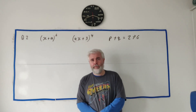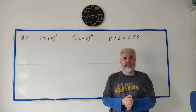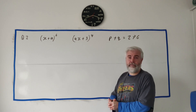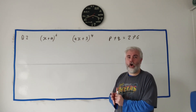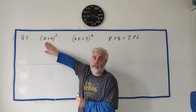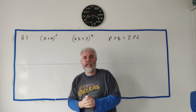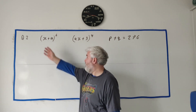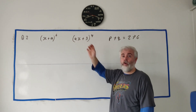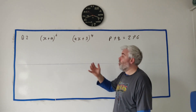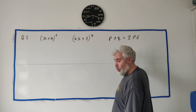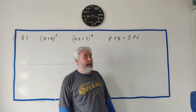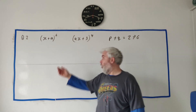In question 2 we're going to be dealing with expanding two terms and solving some algebraic questions. They've said if we expand (x + a)^6 out, the coefficient of x to the power of 4 is p. If we expand the other expression out, the coefficient of x squared is q, and then p plus q is equal to 276 — find out what a is. Solve for a, basically.